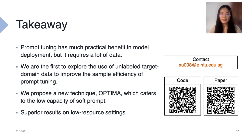We conclude our presentation with the following takeaway messages. Prompt tuning has much practical benefit in model deployment, but it requires a lot of labeled training data. We are the first to explore the use of unlabeled target domain data to improve the sample efficiency of prompt tuning. We propose a new technique, Optima, that caters to the low capacity of soft prompt, and it achieves superior results on low resource settings. More discussions and studies on the effectiveness of Optima can be found in the paper. For any questions, you can contact me through email or access our code and paper using the QR code. Thank you for listening.